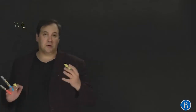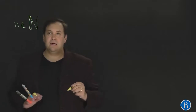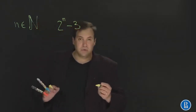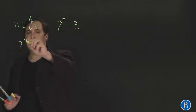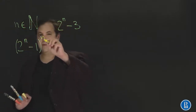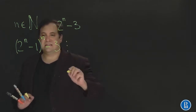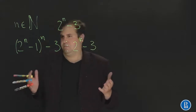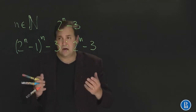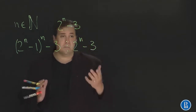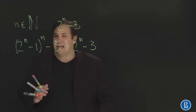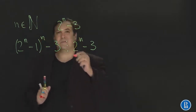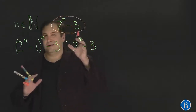Let n be an arbitrary positive integer and consider the number 2 to the power of n minus 3. We will prove that 2 to the power of n minus 1, raised to the power n, minus 3 is divisible by 2 to the power of n minus 3. At first sight one might have no idea how to prove this, because we know nothing about these numbers, but using congruence modulo 2 to the power of n minus 3 — so this is our new n in some sense.